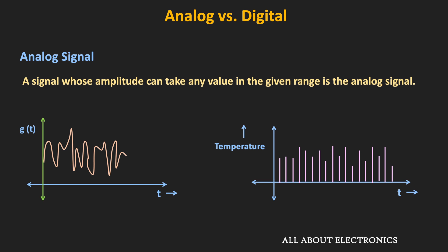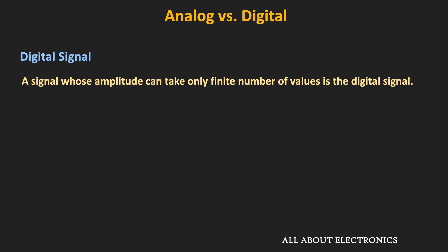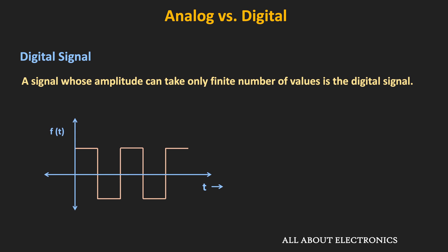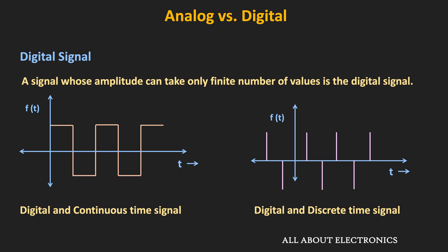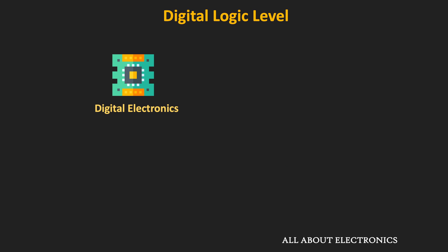Digital signals are those whose amplitude can take only finite values. For example, a signal that varies only between two values is a digital signal, and in the time domain it could be continuous or discrete. Virtually all modern digital circuits work on two voltage levels: a high voltage level referred to as logic high, and a low voltage level referred to as logic low. Since these circuits work on only two discrete voltage levels, their input and output are represented using the binary number system.